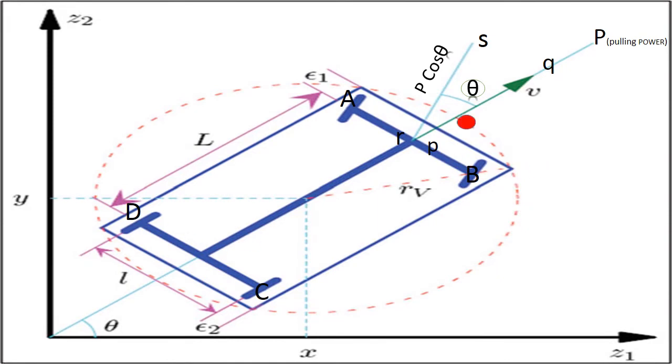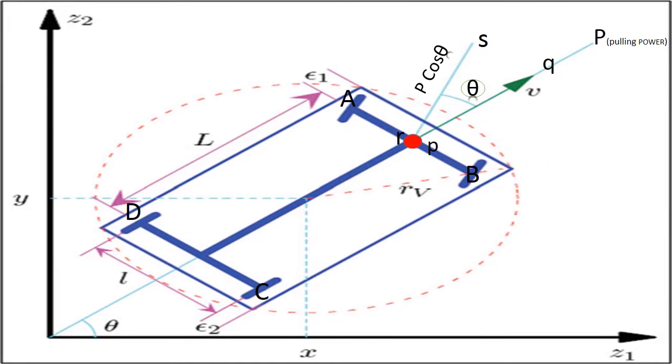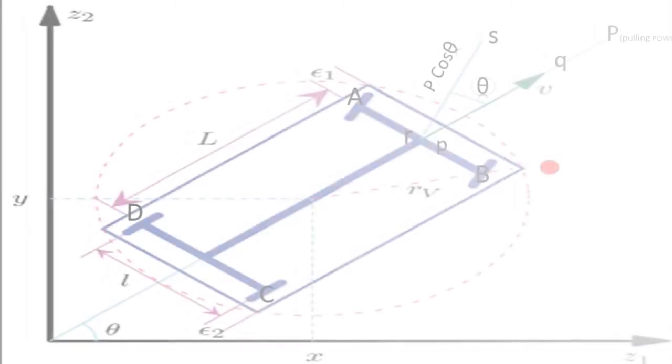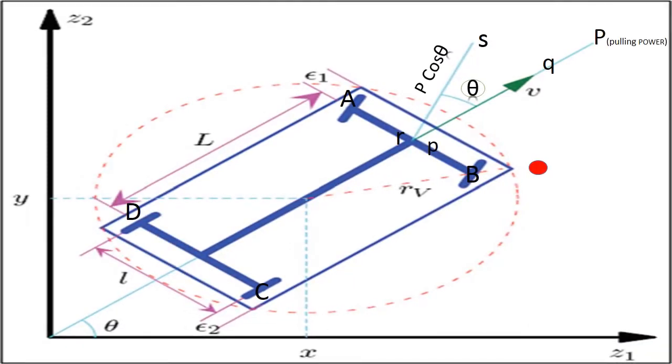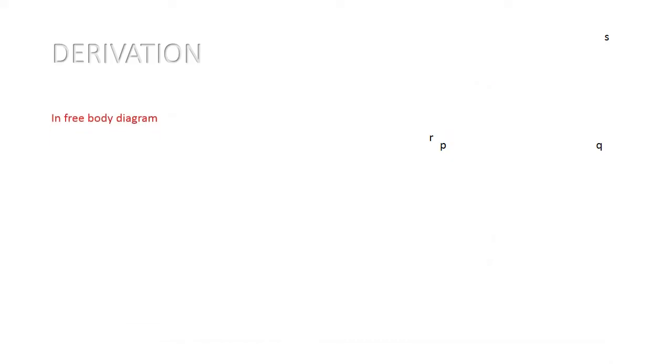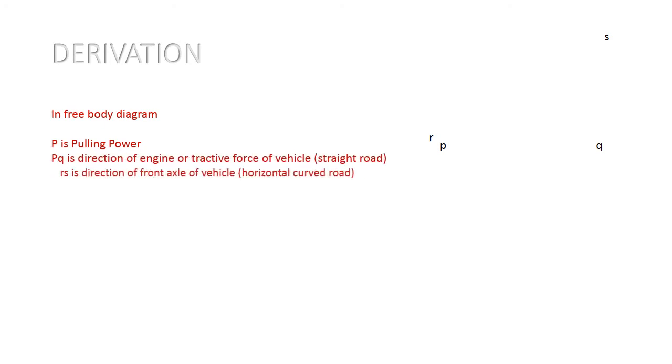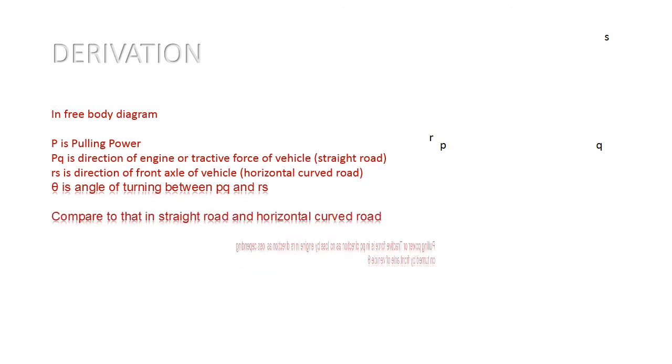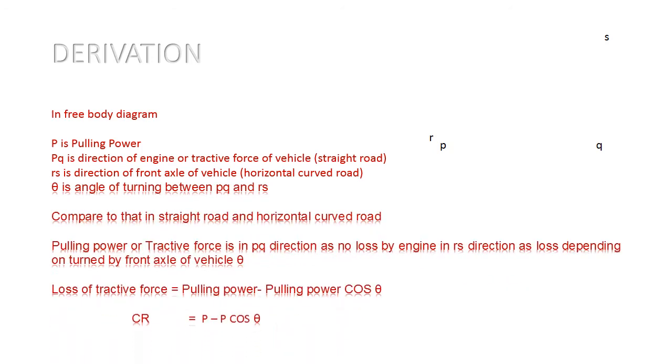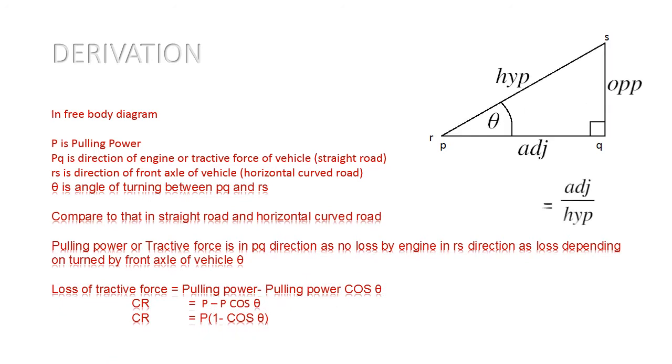In the free body diagram, P is pulling power of vehicle. PQ is direction of engine or tractive force of vehicle in straight road. RS is direction of front axle of vehicle in horizontal curved road. Theta is angle turning between PQ and RS direction.